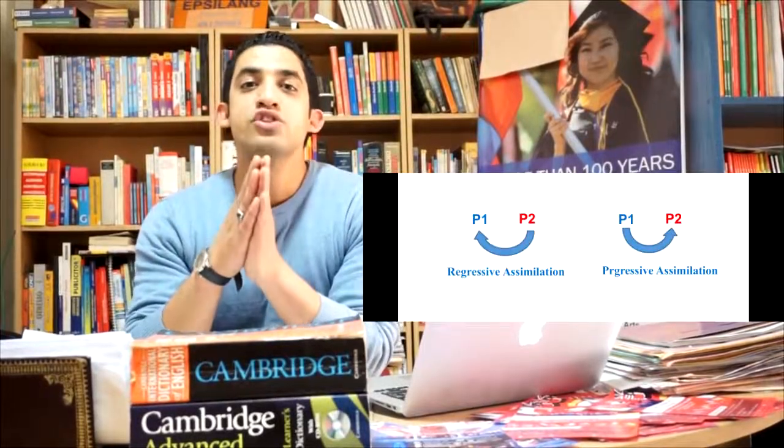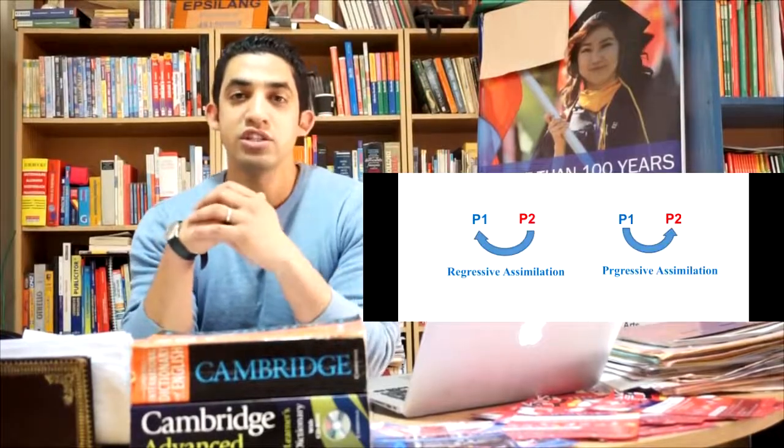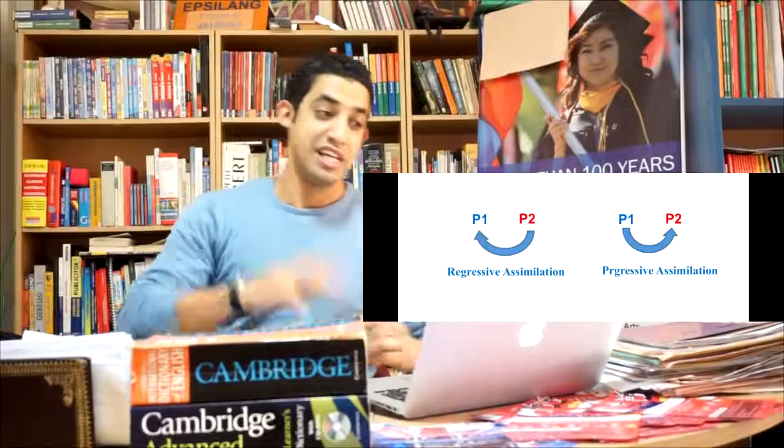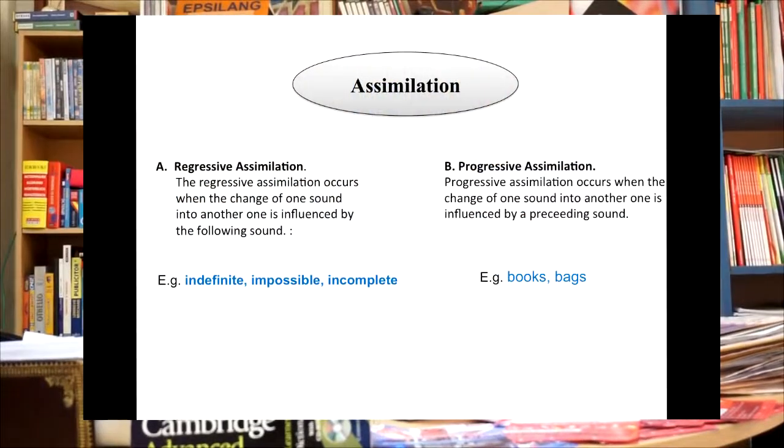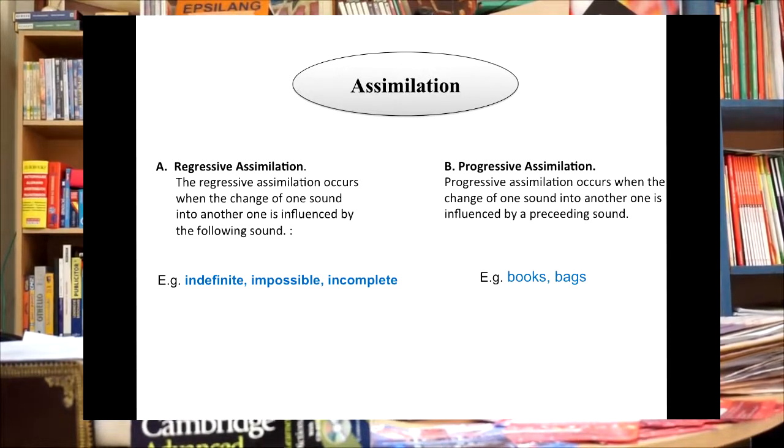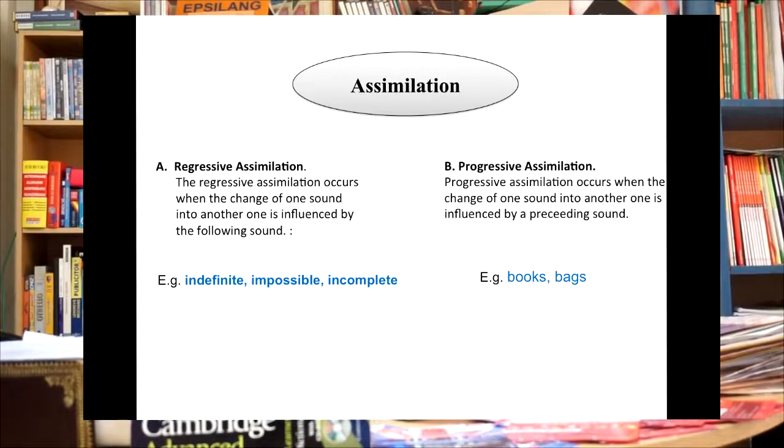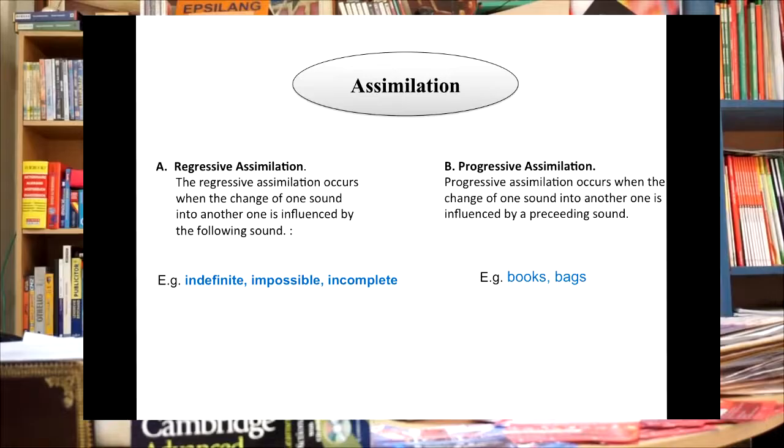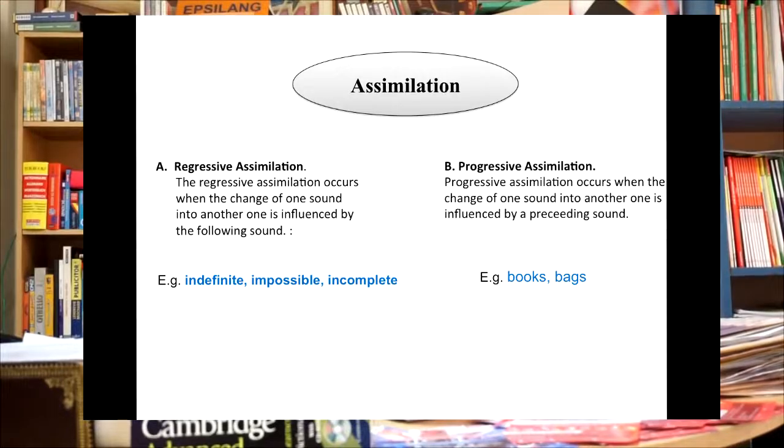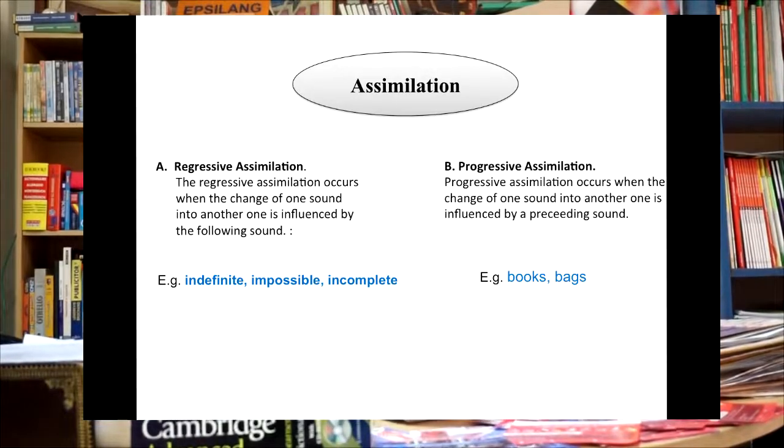Finally, if assimilation is about all the changes that occur when one sound is added to another sound, assimilation can be divided into two major categories: regressive assimilation and progressive assimilation. In regressive assimilation, this occurs when the change of one sound into another one is influenced by the following sound. And here we can mention the example of indefinite, impossible, incomplete. In progressive assimilation, it occurs when the change of one sound into another one is influenced by the preceding sound. And here we can mention the plural morpheme S like books and bags.